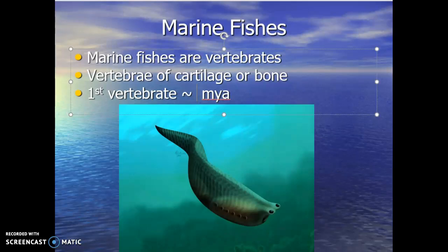The earliest first known vertebrate appeared on Earth roughly around 500 million years ago in the oceans. So marine fish are the earliest vertebrate animals to have evolved on Earth — a very primitive group in some cases, but incredibly diverse in a lot of other cases.